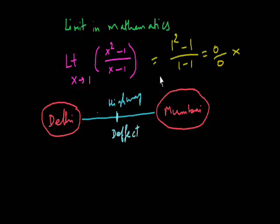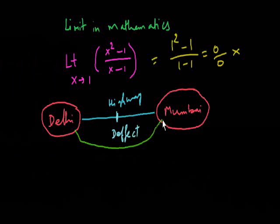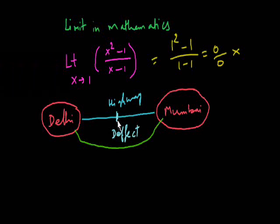Suppose this is Delhi and this is Mumbai. I am going to Mumbai from Delhi. Suppose in the highway if there is any defect, either this way or this way, and it will go to Mumbai in case of defect.